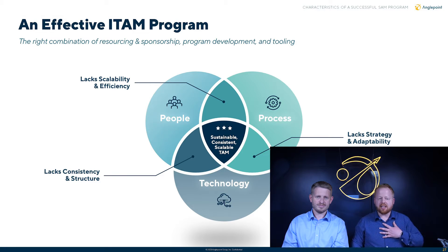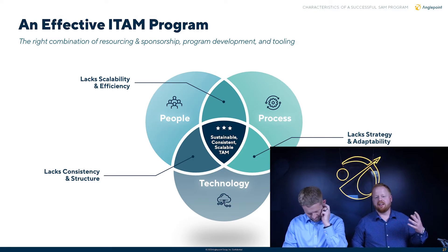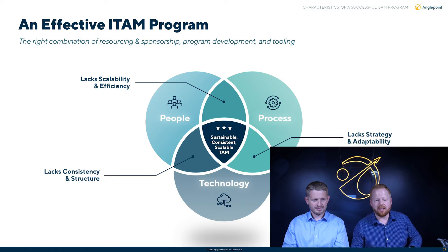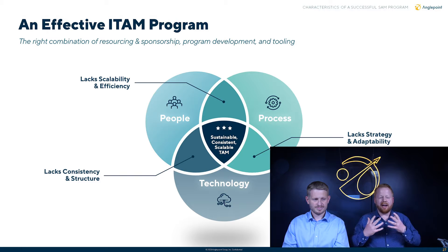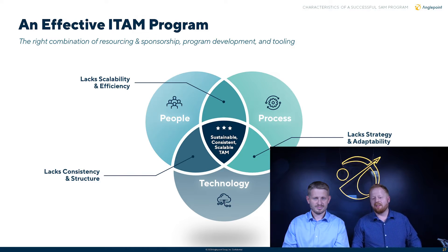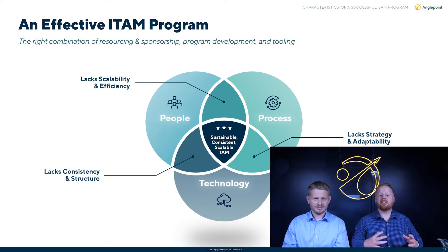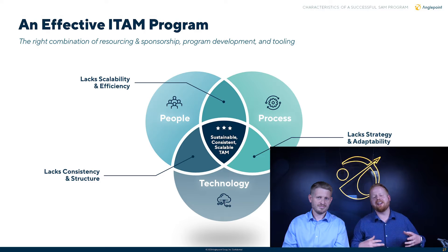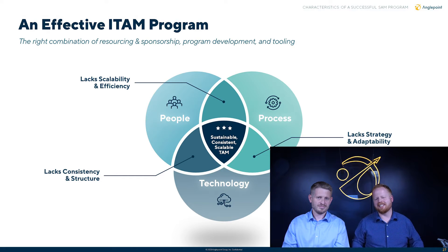For example, if we have technology and we have the process but we don't have the people, then we don't have the right scalability or efficiency. If we don't have technology but we have the right people, that's hard because we can't automate. So we need to make sure that we have all of these perfectly aligned the best we can to create a sustainable, consistent, and scalable ITAM program.